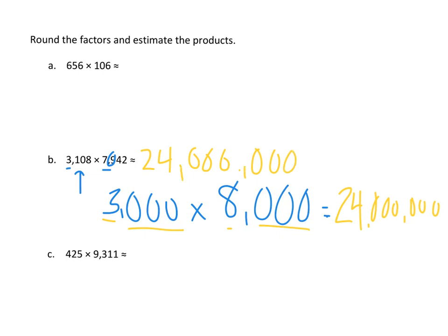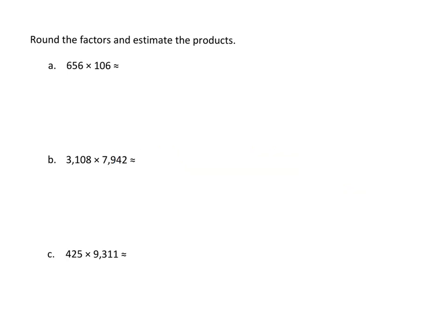Let's do one more problem. So we have 425 times 9,311 is about how much? So again, be careful because these are not in the same place value. My first number goes up to the hundreds and my second number goes to the thousands.